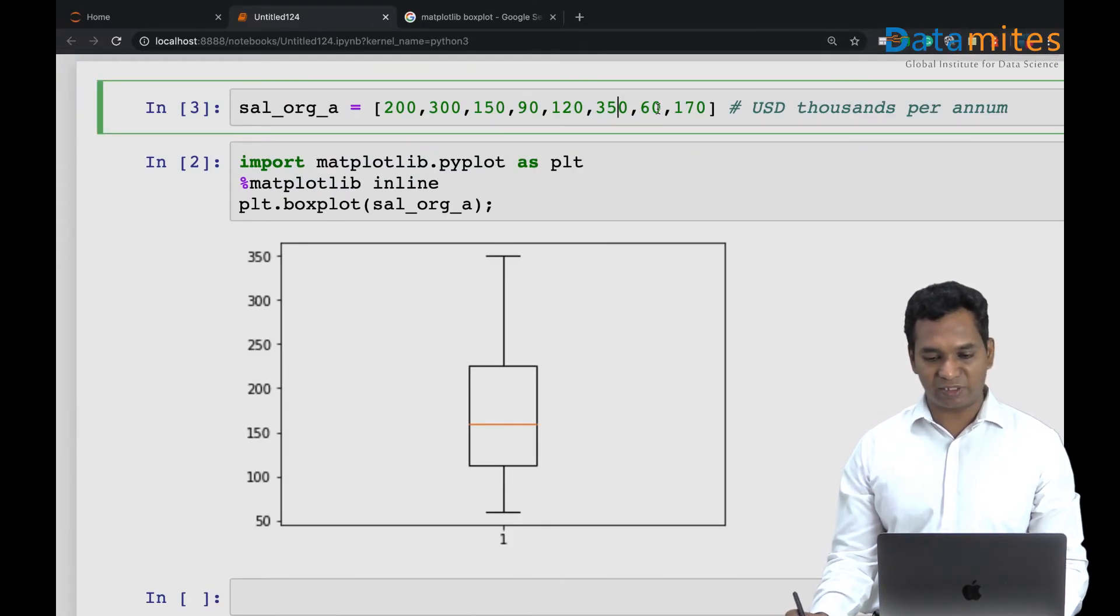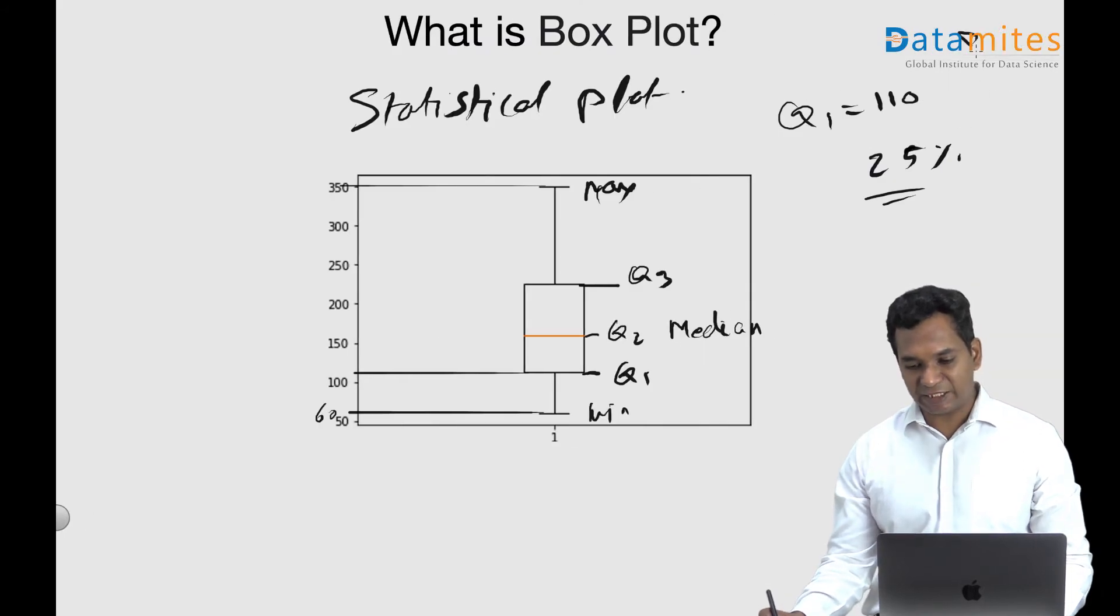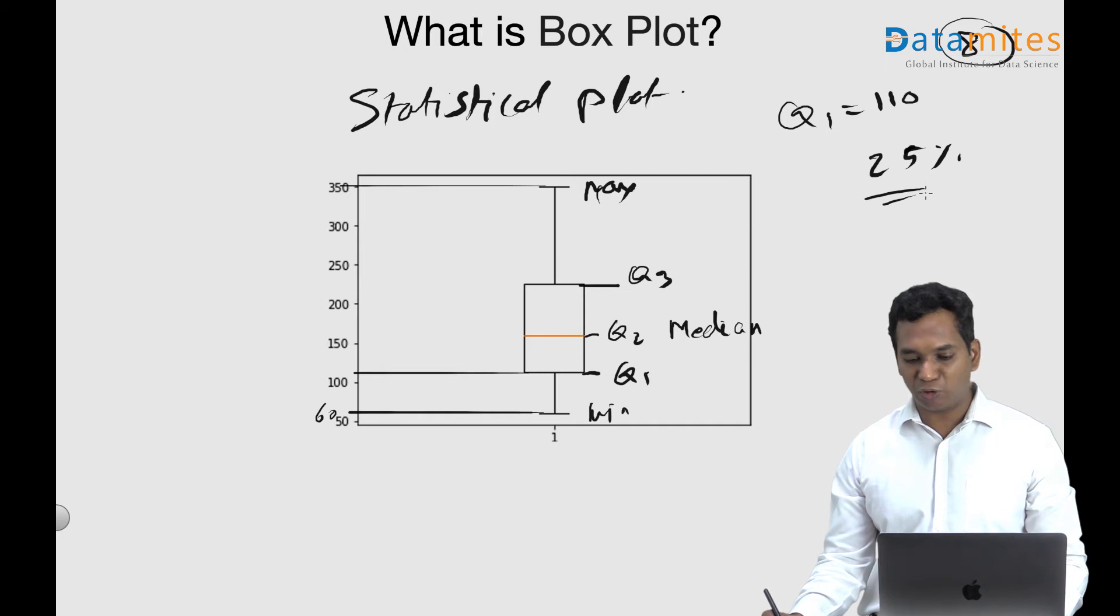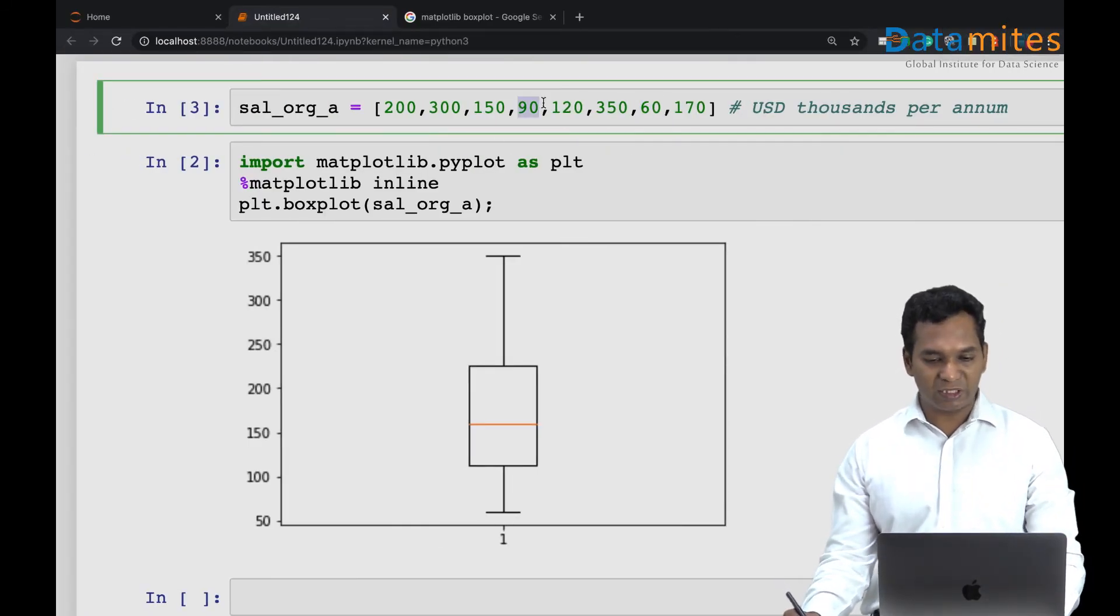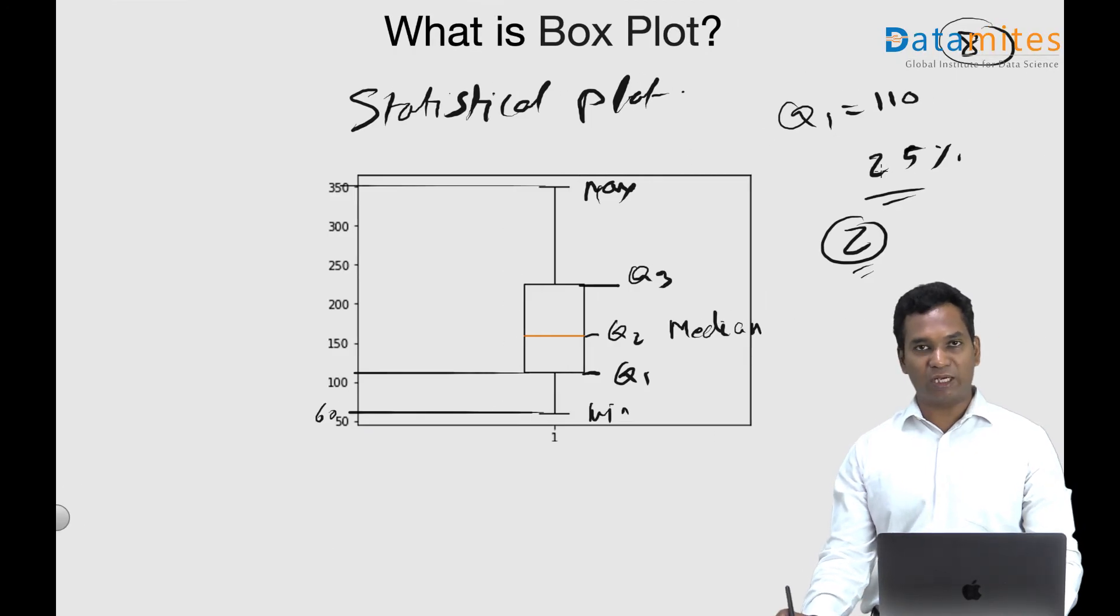So out of eight members, 25 percent is two. Two members are below or equal to 110. You can visually see that there is 90, there is 60. These are the only two numbers below 110. So that's your quartile 1.